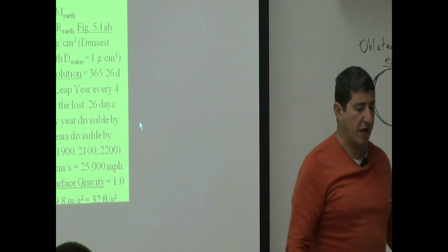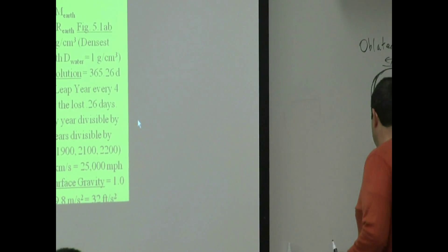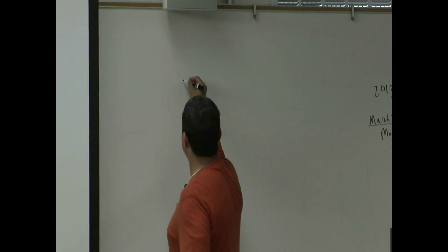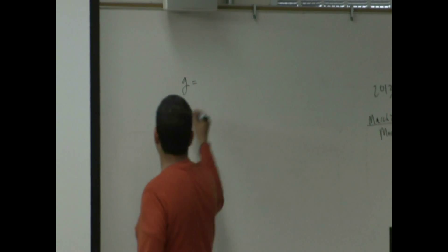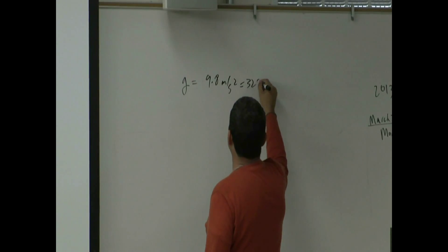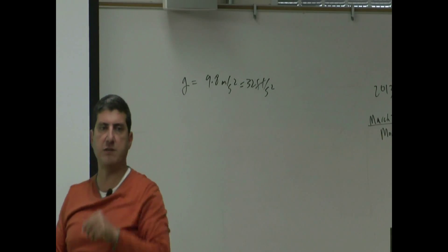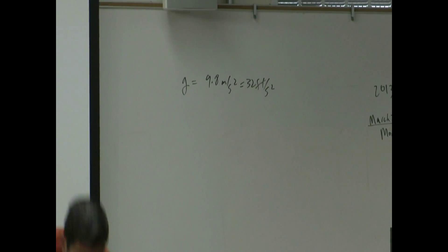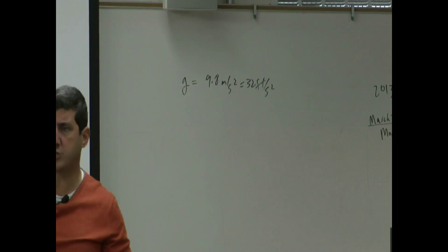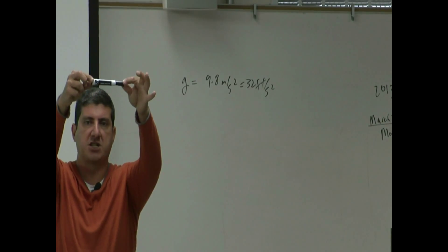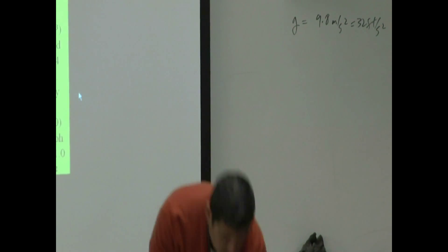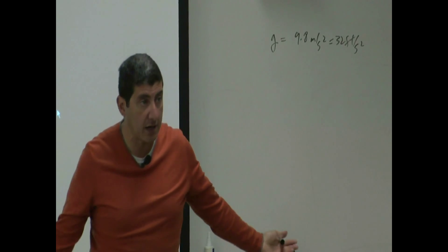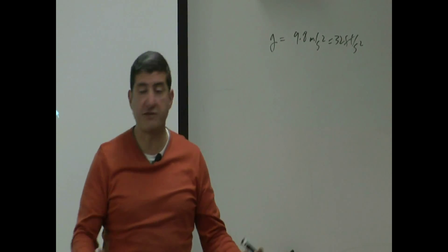Another property is called surface gravity. For the Earth, the surface gravity is called g, 9.8 meters per second squared, or 32 feet per second squared. So basically, the surface gravity measures when you drop something, how fast does it accelerate. If you've ever taken a physics class or if you're going to take it, that's usually one of the labs we do. We measure the acceleration of an object. But the other thing that the surface gravity also measures is when you weigh yourself on that planet, how much you're going to weigh.